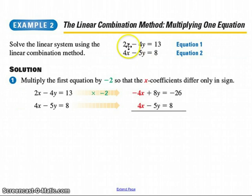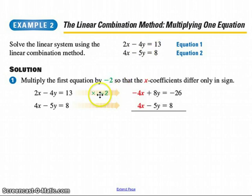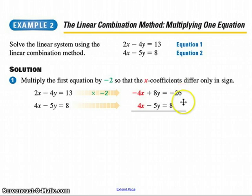Even if we had negative x minus 4y, it would be easy to solve for x. Now, I'm not saying it's hard to solve for x here, but what you're going to end up with are terms such as 13 over 2, or down here it would be 8 over 5 — and those are not pleasant to work with when you go to the substitution step. Look what happens instead if I multiply this top row by negative 2, as the textbook suggests. This top row now becomes — everything is doubled and its sign changes — so it becomes negative 4x, positive 8y, negative 26. This is going to be useful because, as the name suggests, you're going to combine the lines. Linear combination literally means combine the lines.